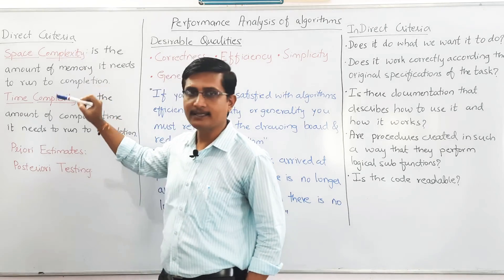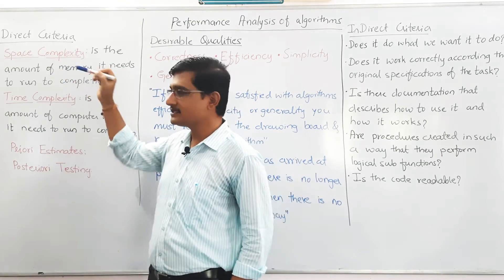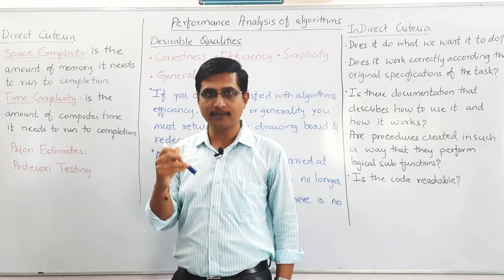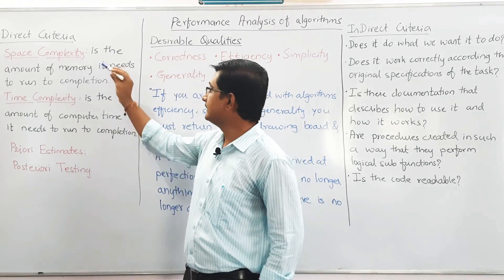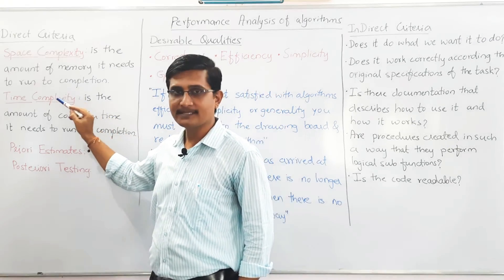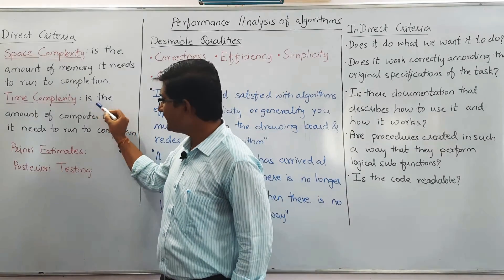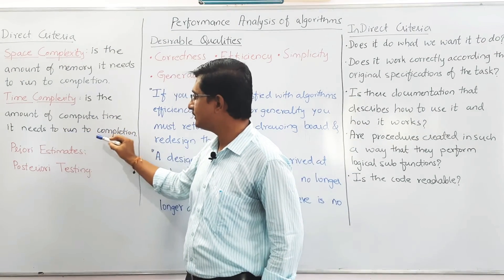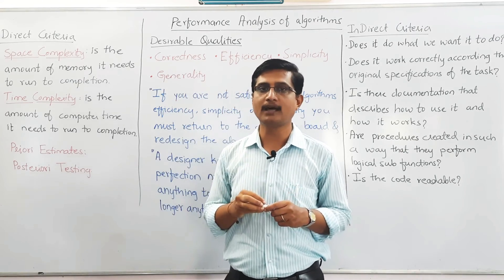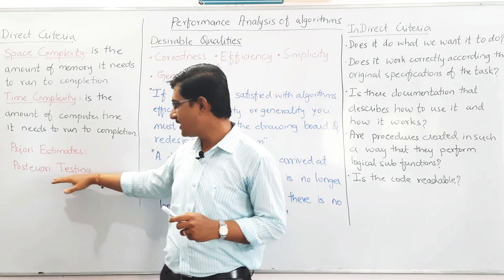The direct criteria for selecting an algorithm are space complexity and time complexity. Space complexity means the extra amount of memory the algorithm requires until execution is completed — the amount of memory it needs to run to completion. Time complexity means the amount of time it requires to execute — the amount of computer time it needs to run to completion. When doing performance analysis of an algorithm, we divide this whole process into two parts: priori estimates and posteriori testing.